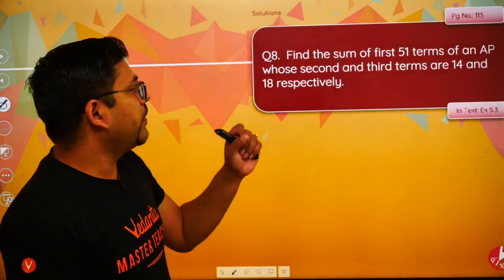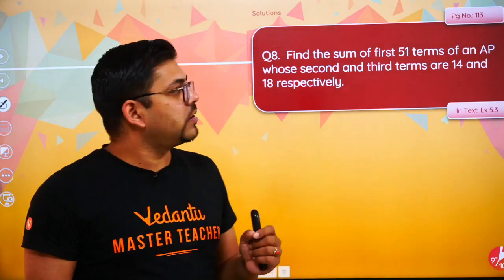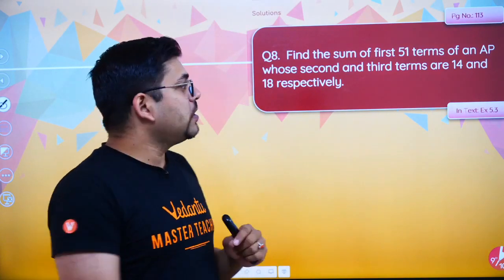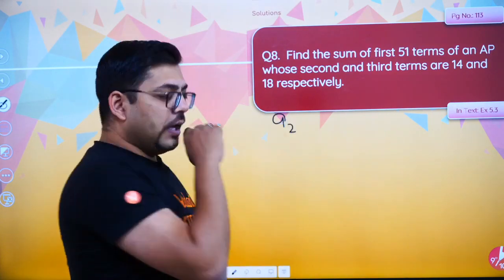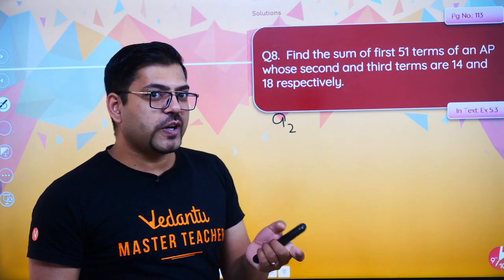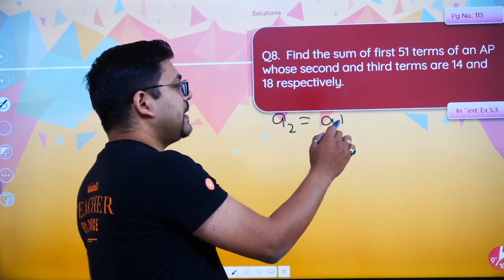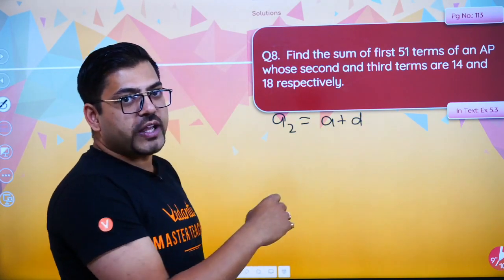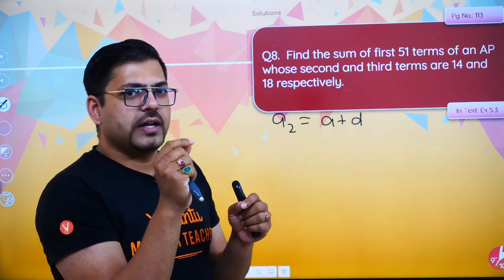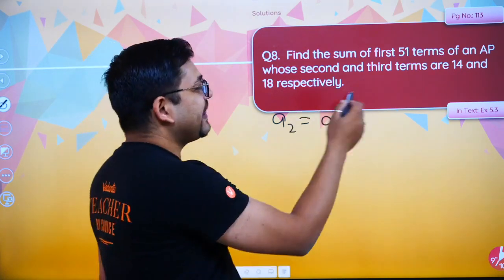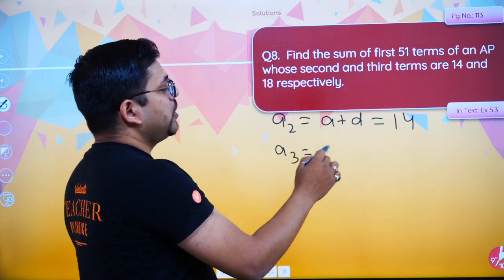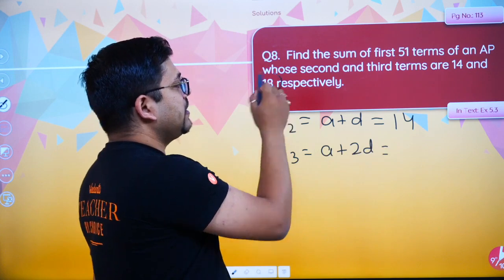Let's move on to the next question. Find the sum of first 51 terms of an AP whose second and third terms are 14 and 18 respectively. Second term and third term are given. So A2 = A + D = 14, using A + (N−1)D with N=2, giving A + D = 14. And A3 = A + 2D = 18.